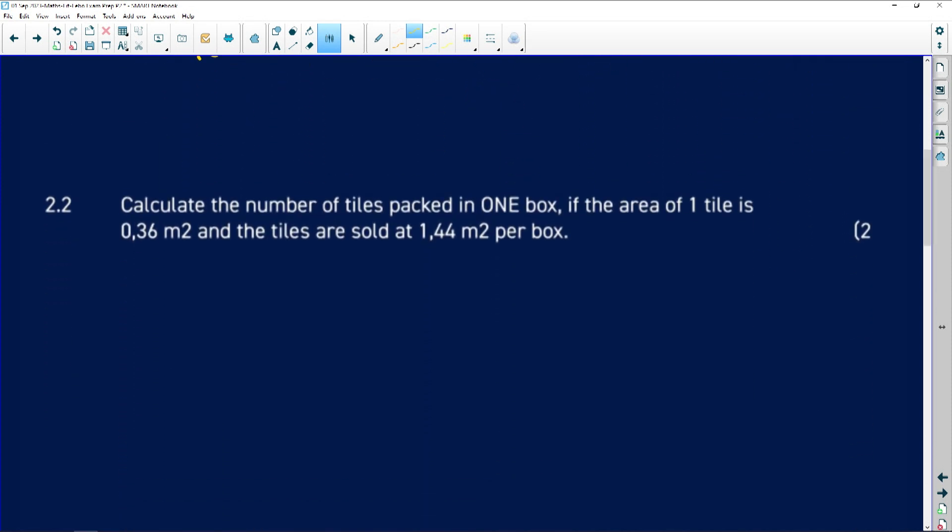If I were to go backwards, I'd just divide. Calculate the number of tiles packed in one box. If the area of one tile is 0.36 meters square and the tiles are sold at 1.44 meters square per box. So we want to know how many tiles are going to be in one box. I use a simple technique when it comes to this in particular and the advisor always give to learners whenever you have a question like this, and it seems a bit tricky. Always remember to write down what you know.